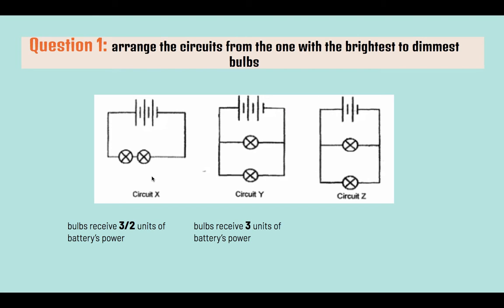Circuit Y is a parallel circuit, as there is more than one path by which the electric current can flow through. So battery power does not need to be shared, and each bulb receives exactly 3 units of the battery's power, because there are 3 batteries.